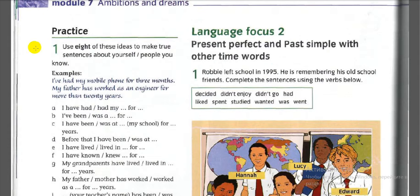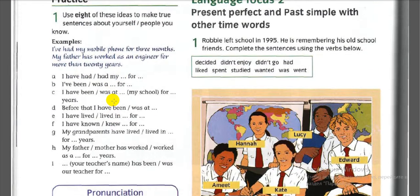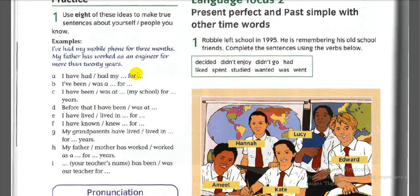Practice: use eight of these ideas to make true sentences about yourself or people you know. Examples: 'I've had my mobile phone for three months.' 'My father has worked as an engineer for more than 20 years.' Use these prompts — for example, 'I have had my car for five years,' and so on. Pause and make eight sentences.